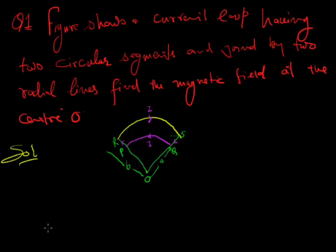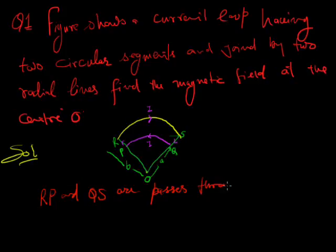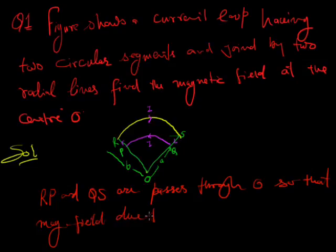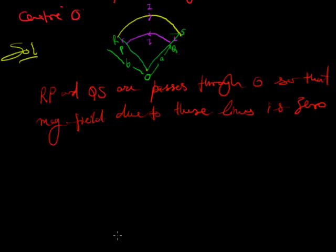Solution. Since the point O lines SP and QR, so the magnetic field at O due to these straight portions is zero. RP and QS pass through O.